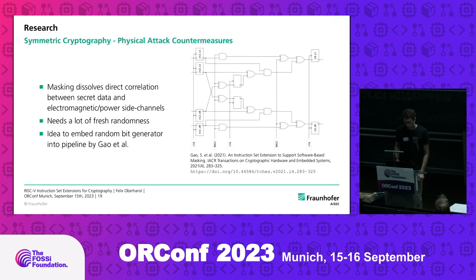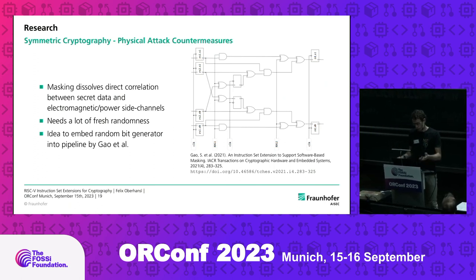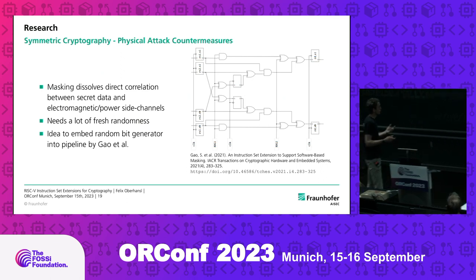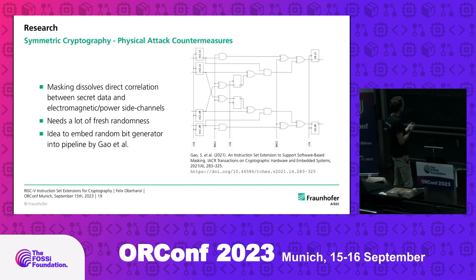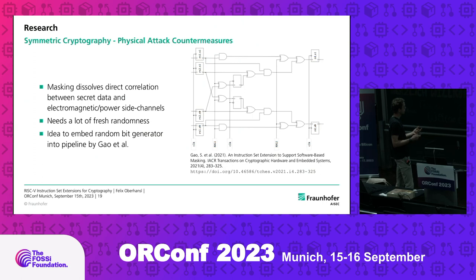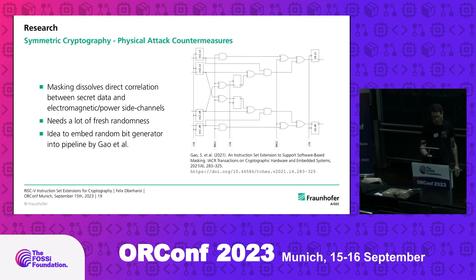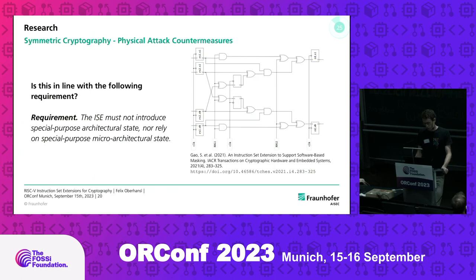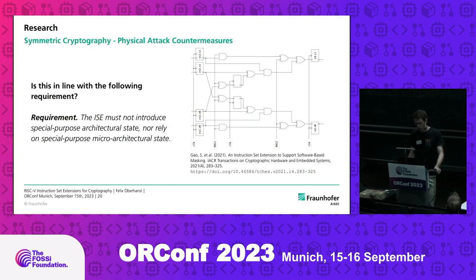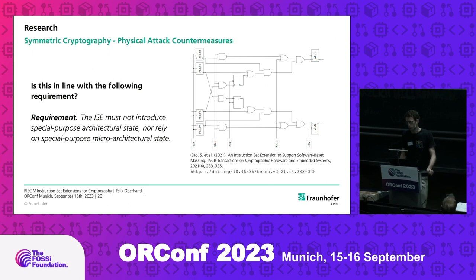The last case study concerns physical attack countermeasures. A side-channel attack, for example, lets us measure secret information from a chip's power consumption. The masking countermeasure has seen a lot of research attention, but it needs a lot of random data. Some people decided to just embed random number generators directly into the pipeline so you have that available every time you want. There is also a requirement that you must not introduce special-purpose architectural state, which might contradict that — but people could choose to ignore this. Whether a standard ever will, I don't know, but it's interesting that it's out there.